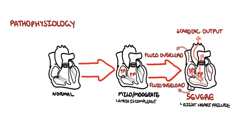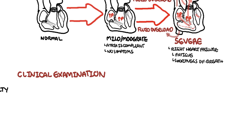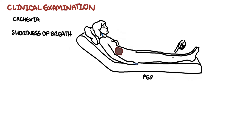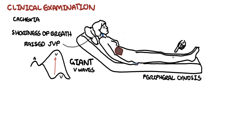Mild to moderate tricuspid regurgitation usually presents with minimal symptoms. Severe tricuspid regurgitation leads to symptoms of right-sided heart failure including fatigue, shortness of breath, and reduced exercise tolerance. On examination, the patient can be cachectic and short of breath, with peripheral cyanosis due to poor oxygenation, a raised jugular venous pressure, and a pulsatile jugular vein with giant V waves indicating a ventricular problem.